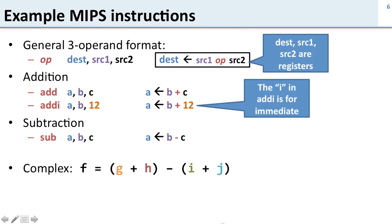Now what if we want to do something more complex? So there's no instruction for this right here. There's no instruction that says take two registers add them together and subtract the result of two other registers added together. So in order to do this complex instruction we need to split it into multiple simple instructions. So first we're going to do the g plus h, then we're going to do i plus j, and then we're going to do the subtraction.